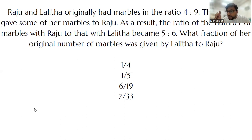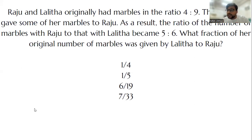We have 5 upon 6. Now, 11 is a prime number — no one can reduce any number. Hence, answer option 11 is mandatory. Who can see the answer option? They are right. The answer is the last option: 7 upon 33.